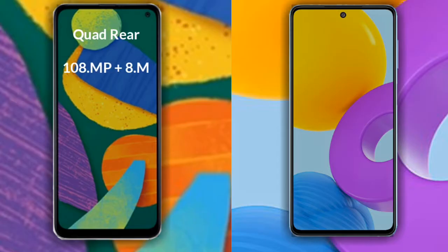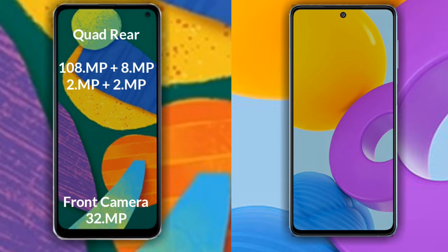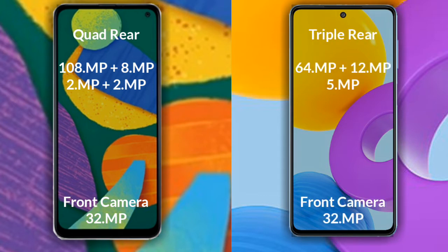Comparing the cameras: the Samsung Galaxy M53 has a rear quad camera setup. The primary camera is 108MP, the secondary sensor is 8MP, the third sensor is 2MP, and the fourth sensor is 2MP. Its front camera is 32MP. The Samsung Galaxy M52 also has a rear quad camera. The primary camera is 64MP, the secondary sensor is 12MP, the third sensor is 5MP, and its front camera is 32MP.